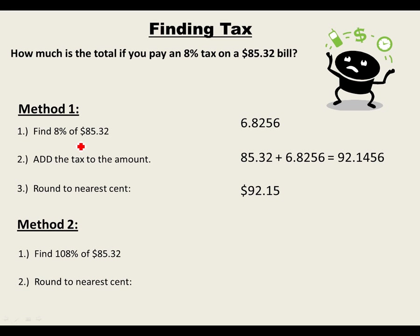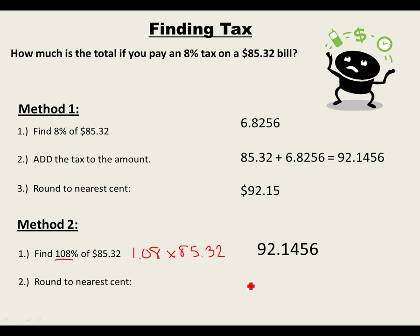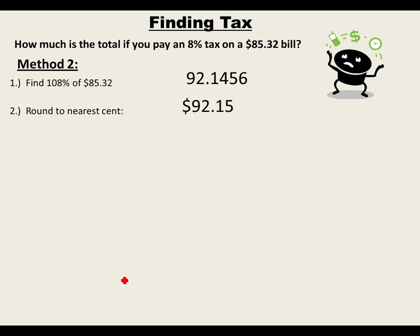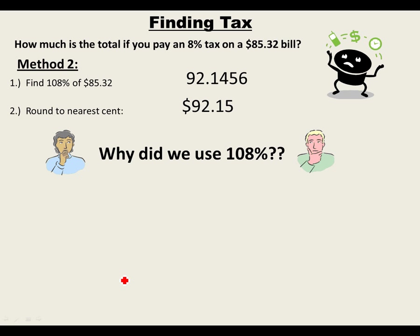The other way to handle tax is similar to the shortcut for discounts but in reverse. Find 108% of $85.32. You do 1.08 times 85.32, and when you round to the nearest cent, you get $92.15.